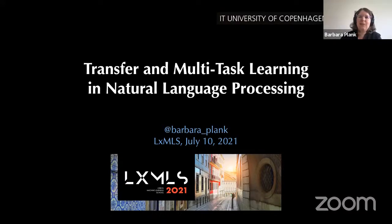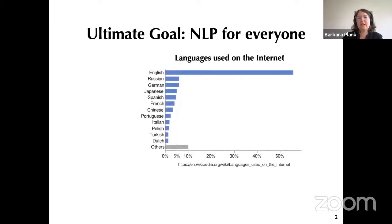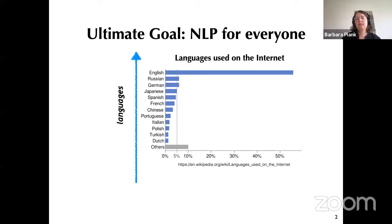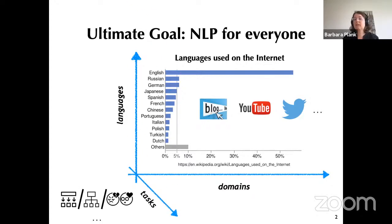I'll give you an overview of the challenges we're trying to address with these methods. One of the big goals of NLP is ultimately to have language processing technology for everyone. We would like to go way beyond the languages supported today, because there are so many with very little support as of now. We'd also like technology that works well across different text domains or genres, and support many NLP tasks.